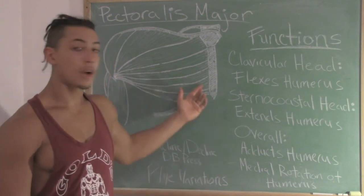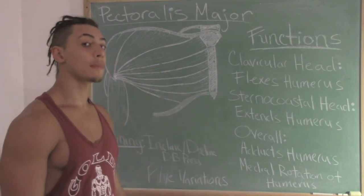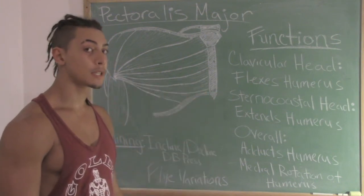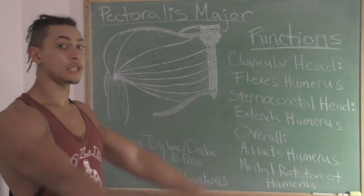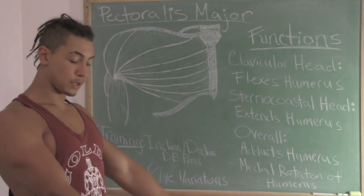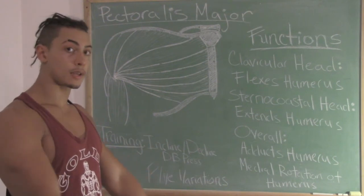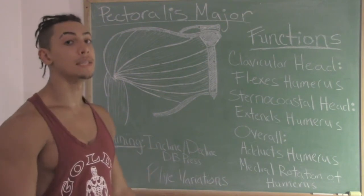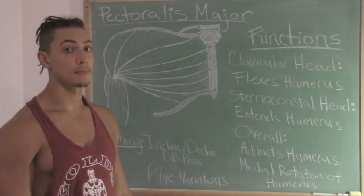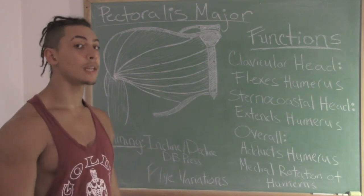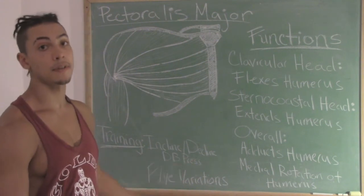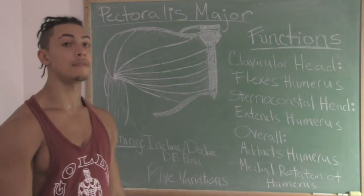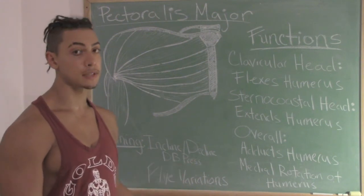Looking at the sternocostal head, thinking back to its specialized function — extension of the humerus — this position looks like a decline press of some sort. Here I would suggest dumbbells on the decline to develop the lower chest.